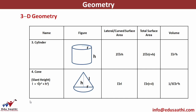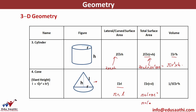For a cylinder, the curved surface area is 2πr·h (perimeter of base into height), and total surface area is 2πr(r + h). Volume is πr²h. For a cone, the curved surface area is πrl (where l is the slant height), and total surface area is πr(r + l). The volume of a cone is (1/3)πr²h, which follows from the pyramid formula of one-third area of base into height.